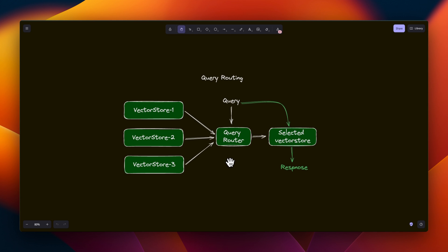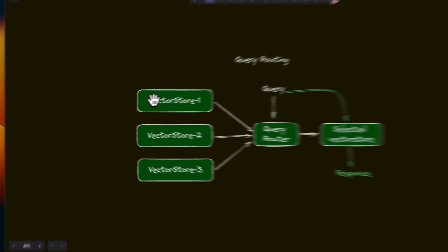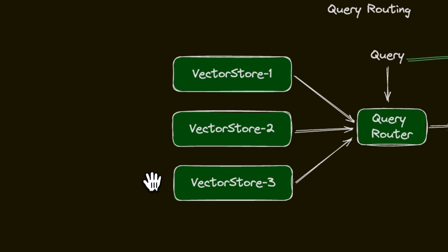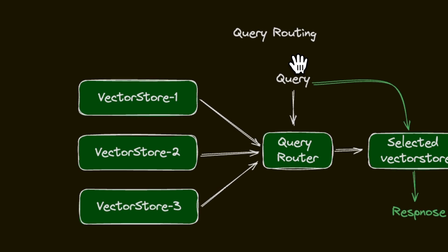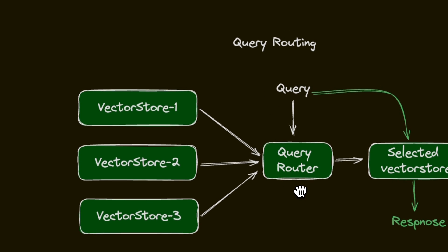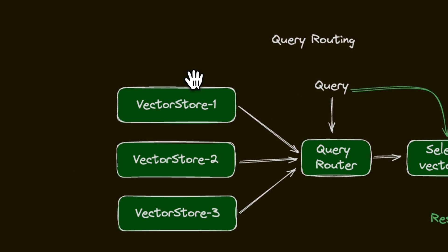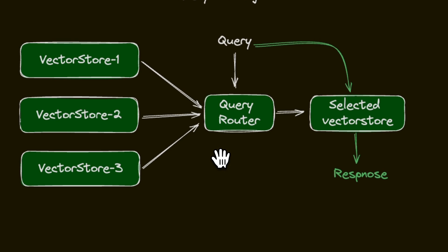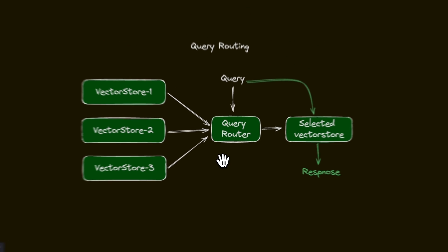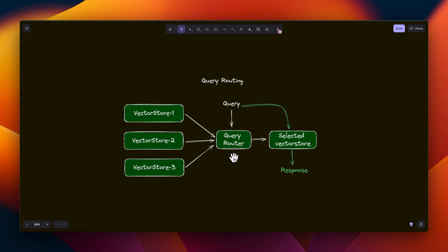Next we're going to look at its ability to do query routing. What exactly is query routing? Let's say you have multiple databases — for example, you are a teacher and you create a vector base for mathematics, one for physics, and one for chemistry. When the user asks a question, the query router has to decide which vector store to use to generate an answer. If the question is related to physics it will retrieve information from the physics vector store; if it's related to mathematics it will retrieve data from there. You can expand this to other use cases — for example, in a company with different departments you can create vector stores for each department, and depending on the query and user authorization level, select which vector store to use.